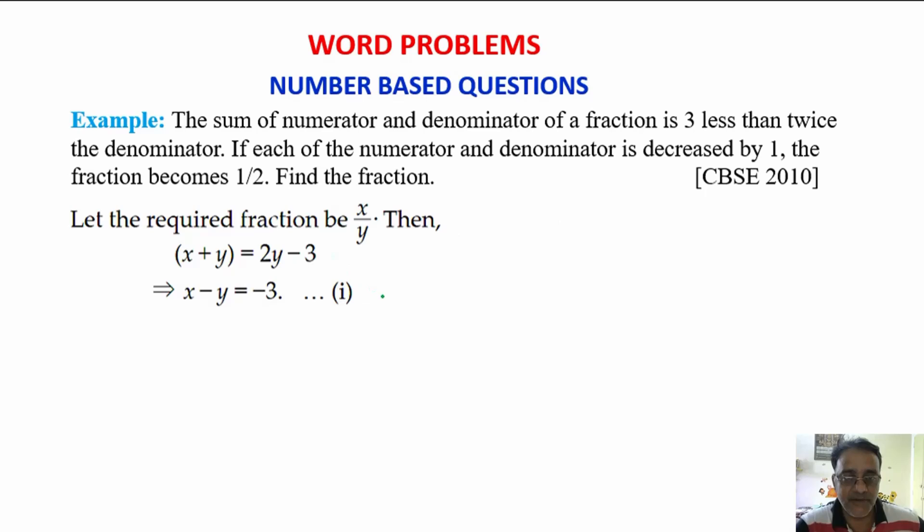So, this we have to simplify. Equation number 1. Now, the second condition is x minus 1 upon y minus 1 is equal to 1 by 2. What we will do? We will again simplify this, cross multiply, 2x minus 2 is equal to y minus 1.